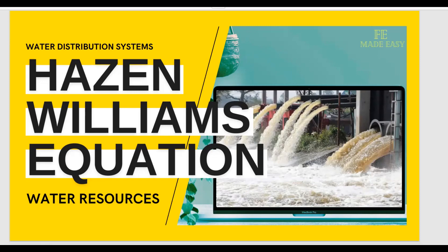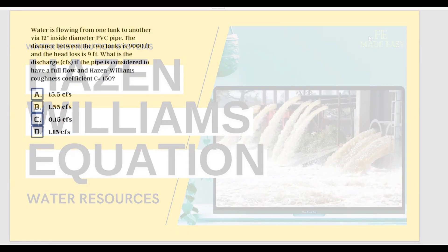Let's go. Water is flowing from one tank to another via 12-inch inside diameter PVC pipe. The distance between the two tanks is 9,000 feet and the head loss is 9 feet. What is the discharge in cubic feet per second if the pipe is considered to have full flow and Hazen-Williams roughness coefficient C equals 150?